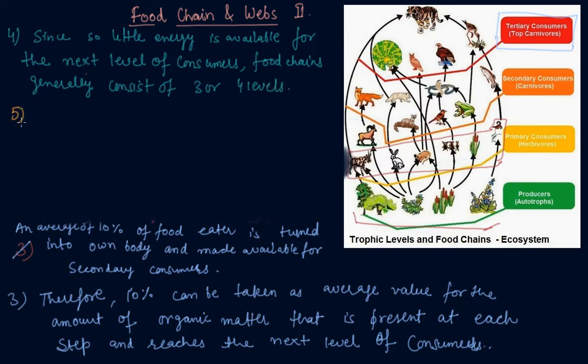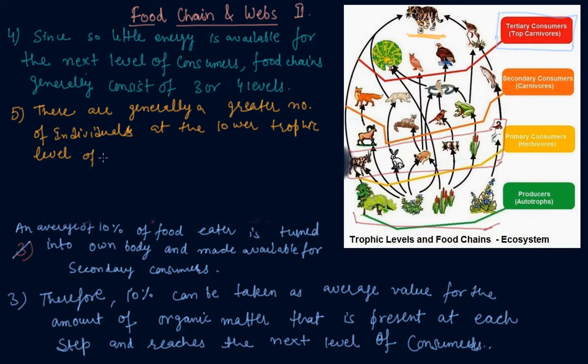Now comes the fifth point. There are generally a greater number of individuals at the lower trophic level. As you can see in the picture that at the lower trophic level there are more number of individuals than at the tertiary level of an ecosystem. The greatest number is of producers.